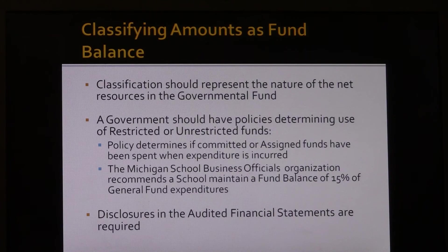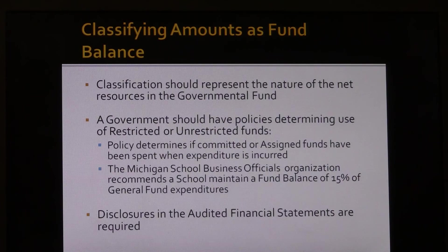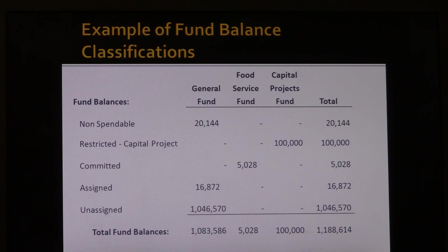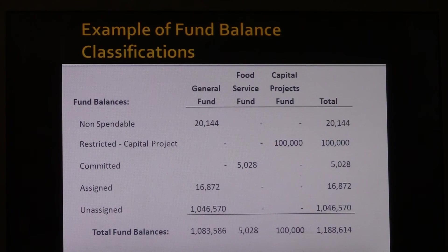Certain disclosures are required in the notes of the audited financial statements for each academy, such as policies regarding expenditures, a minimum fund balance requirement, or a description of the authority required to designate fund balance. Your external auditor will be able to assist with the required note disclosures. This is an example of what the different types of fund balances in the governmental funds may look like. Note the descending order from most to least restricted, beginning with non-spendable and ending with unassigned. Not all governmental funds will have all five types of fund balances.